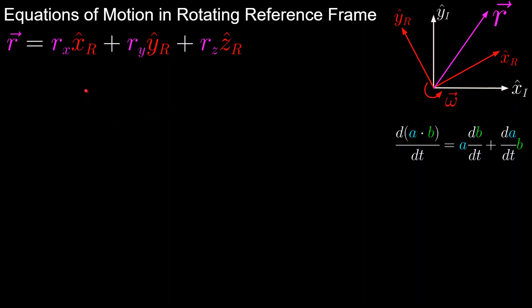In this case, we're going to choose to describe the position vector with coordinates of the rotating reference frame, which we can denote as r_x in the direction of x-hat rotating, r_y in y-hat, and r_z in z-hat.